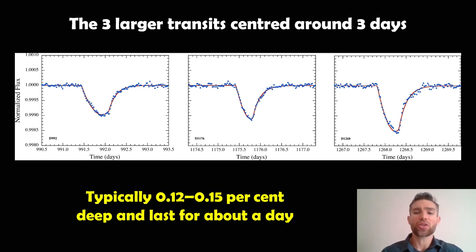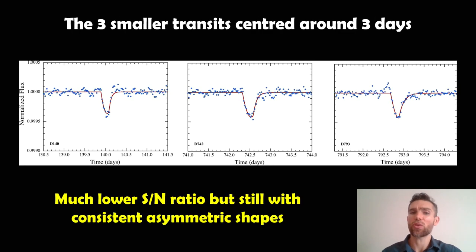And each of those transits is centered around three days worth of observation. So the bluish dots there are individual images and brightness that's been calculated from that. And then the red line is the best fit to that from some model. Now if you look at the three smaller ones, the signal to noise ratio is obviously not as good. You can see it's a little bit more noisy. But the fit does show that it's asymmetric still. So all six of those objects are likely the same thing.